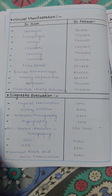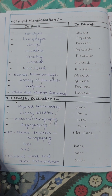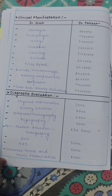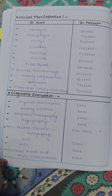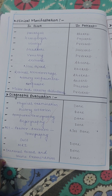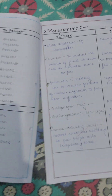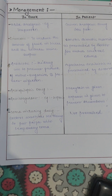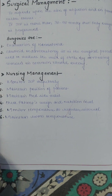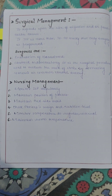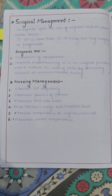For clinical manifestation and diagnostic evaluation, you have to make a column comparing the theory part with the condition you have seen in the patient. Then comes the management part, including surgical intervention and surgical management — write what surgical management has been done.